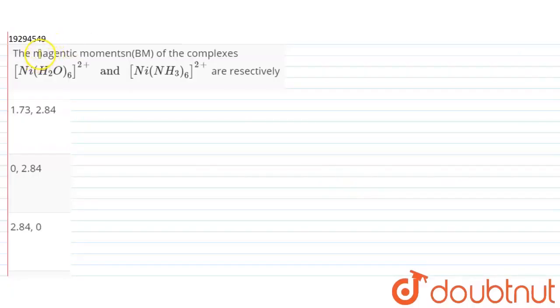Hello, Prince. What should we tell you about the magnetic moments of the complexes Ni H2O whole 6, 2 positive, and Ni NH3 whole 6, 2 positive respectively? What should we tell you about the magnetic moments of these complex cations?